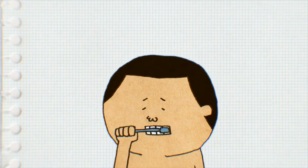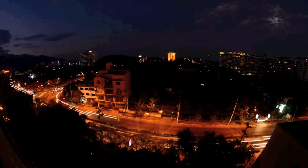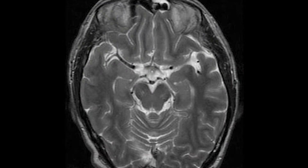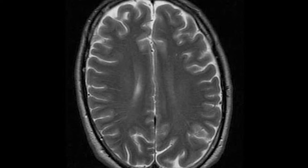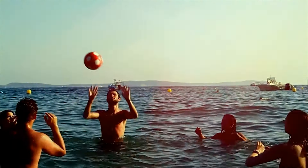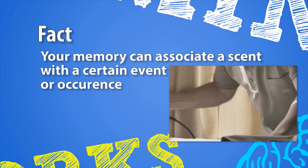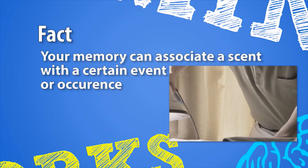Every day, our brain processes information while all of the different systems work together to come up with a connected thought. Through memory, we are able to store, preserve and reproduce information. Whether we remember something at a snap of a finger or over a longer period of time, it takes a lot of factors in our brain to complete the process. Isn't it amazing how much information our brain can store? Fact: your memory can associate a scent with a certain event or occurrence — a smell can trigger the memory in your mind associated with it.